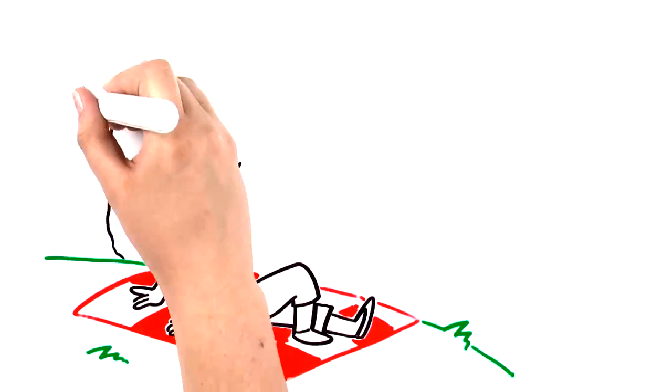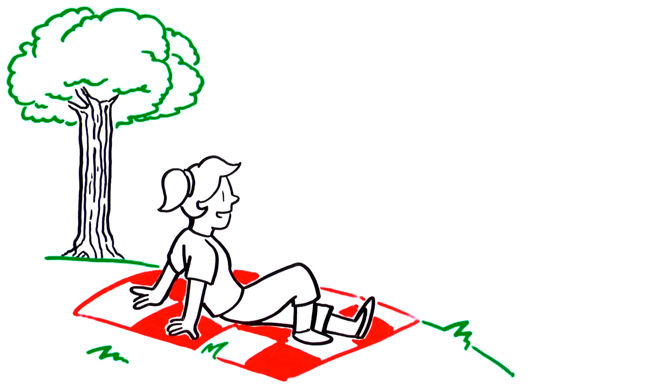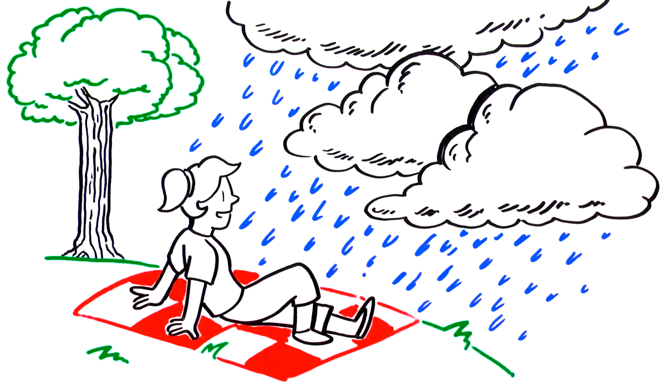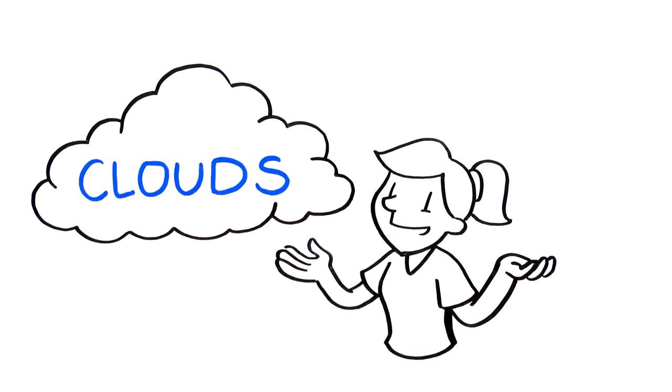When you see fluffy white clouds in a blue sky, you know you're usually in for a pleasant afternoon. A sky full of thundering dark clouds, and you'd better find an umbrella. What could be easier than understanding clouds, right?